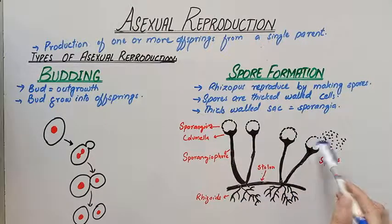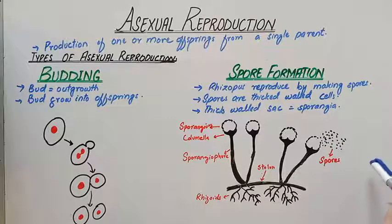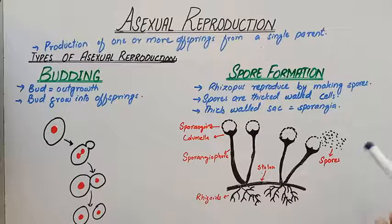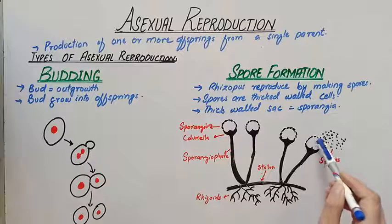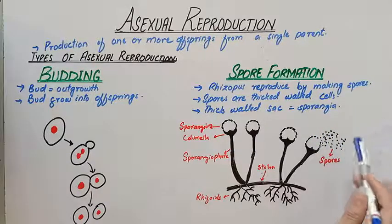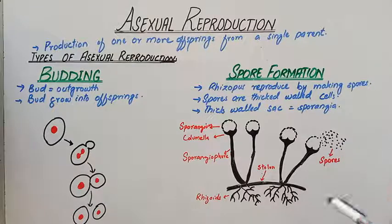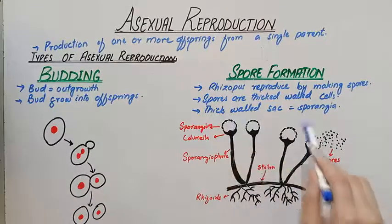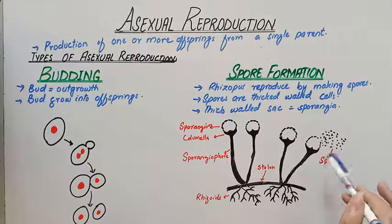In the process of spore formation, spores are dispersed from the parent. The first step is that the sporangium bursts, and spores are discharged and released. The second step is that the spores are dispersed away from the parent.